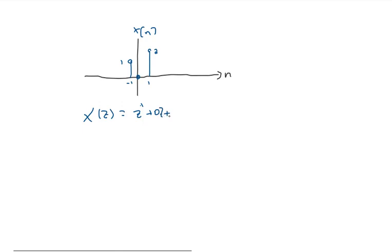Plus 2 Z to the minus 1, because it's a future value. This is past, this is present.